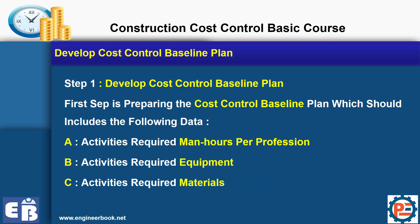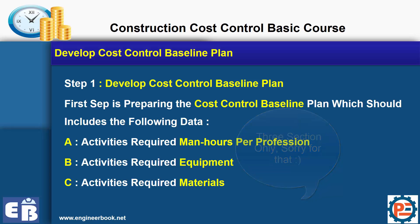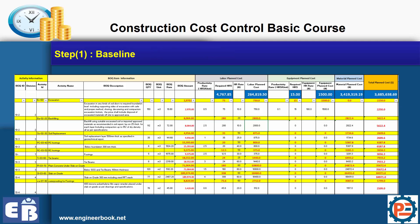In order to develop the cost control baseline plan, we need four main sections: man hours, equipment, and materials. Let me show you how the baseline looks like — it is very simple but very accurate. We have the first section for Activity, second for Bill of Quantity, third for Labor, fourth for Equipment, and the final section for Materials. We do all this breakdown in order to get the total planned cost.